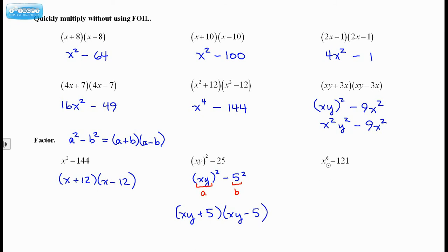Last one. x to the 6th minus 121. Well, 121 is a perfect square. And you may think, well, that's not a perfect square, because that exponent is a 6. Well, it is a perfect square, because remember, x to the 6th could be written as x cubed squared. And this is minus 11 squared, just to show that. So this is a perfect square. And it's like this is the a, that's the b. So factoring this quickly gives x cubed plus 11, x cubed minus 11. And we're done.